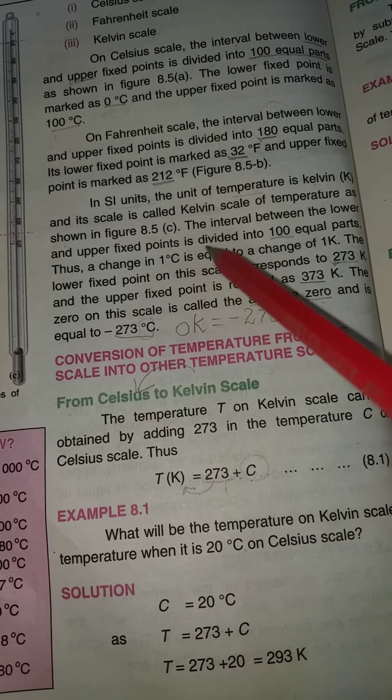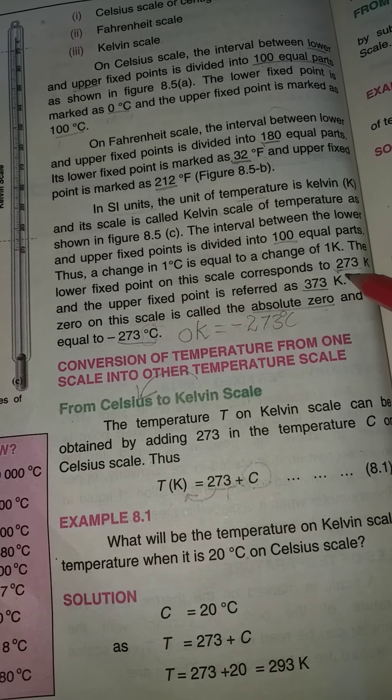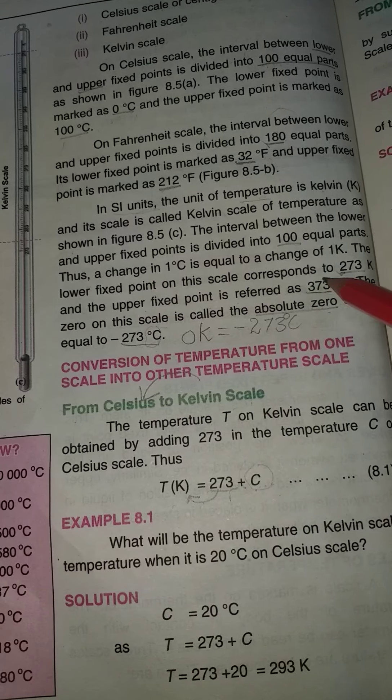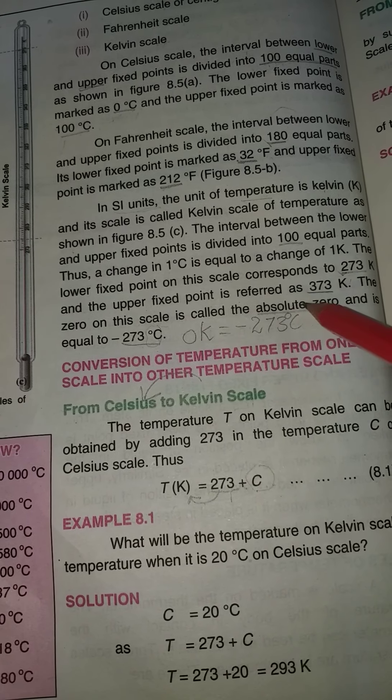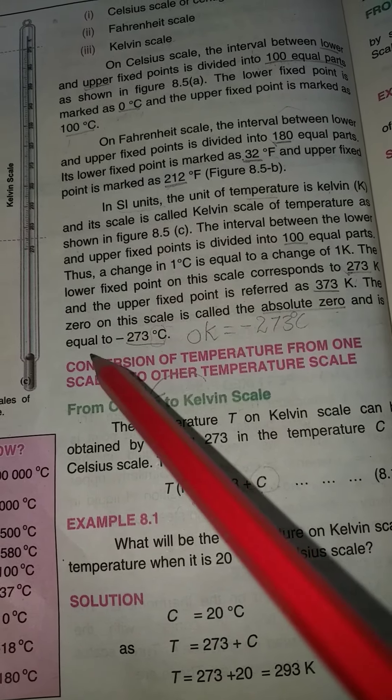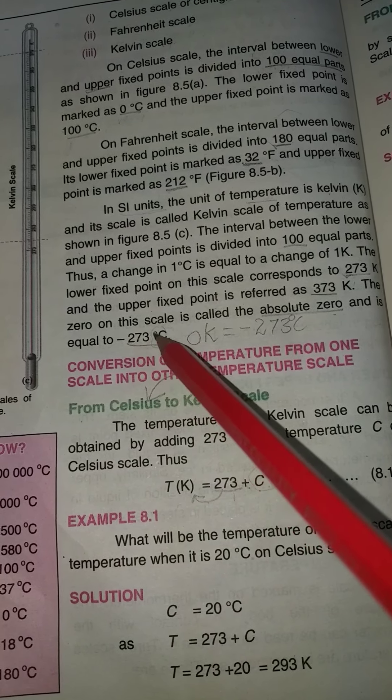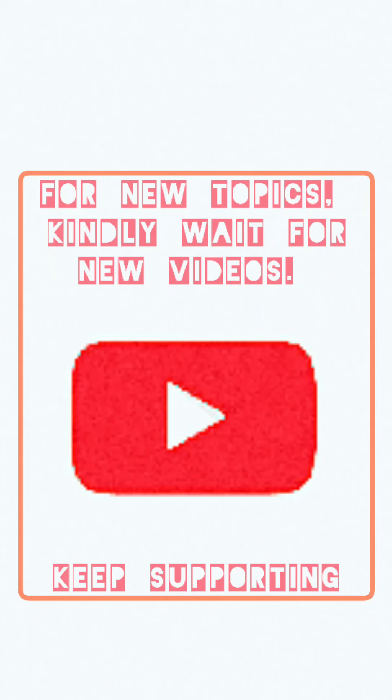The Kelvin scale has 100 intervals. The lower point is 273 and the upper point is 373. Zero is called absolute zero. The zero on the Celsius scale is equal to -273°C. The lower fixed point of 273K corresponds to 0°C.